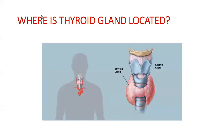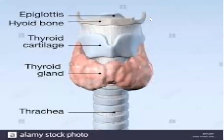So where is the thyroid gland located? The thyroid is a butterfly-shaped endocrine gland located in the neck. It is wrapped around the trachea just below the thyroid cartilage and Adam's apple. As you can see, this is the thyroid cartilage, this is the thyroid gland, and this is the trachea.